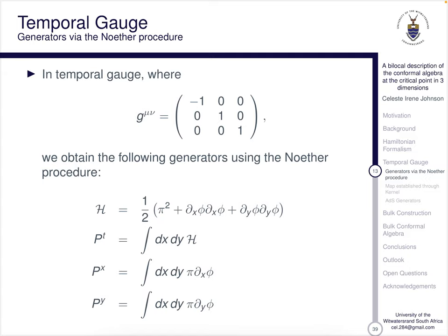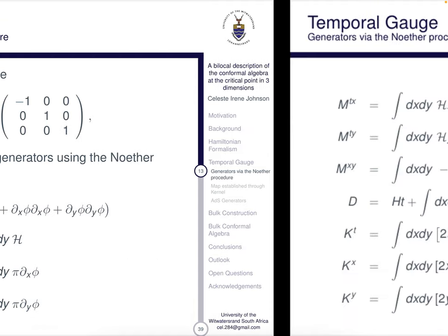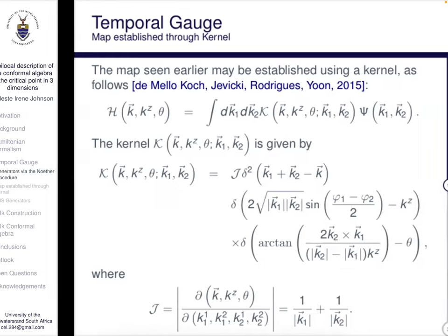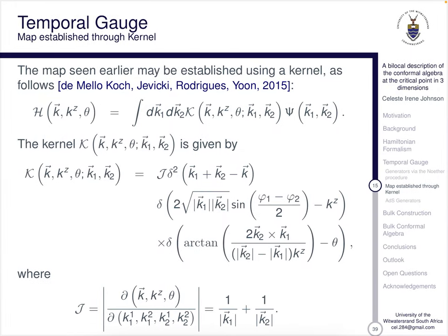Now let's have a look at temporal gauge. If we just follow the NUFA procedure and we're using three dimensions, we're able to come up with the following generators. Furthermore, the map between AdS and the conformal field theories can be established using a kernel. This kernel, which is the calligraphic K, is simply given by a whole bunch of delta functions which impose this map, multiplied by a Jacobian. What's quite nice is that this Jacobian simplifies nicely to 1 over mod k1 plus 1 over mod k2.